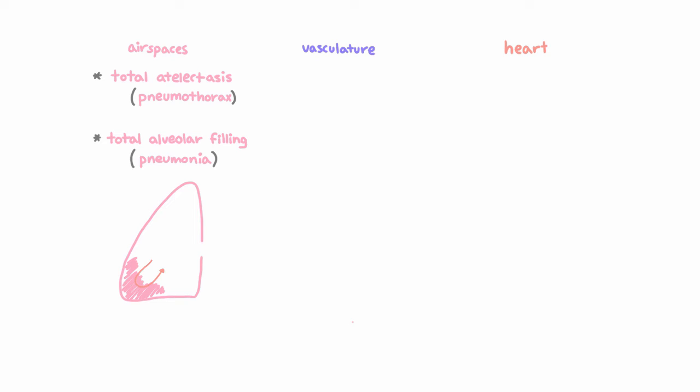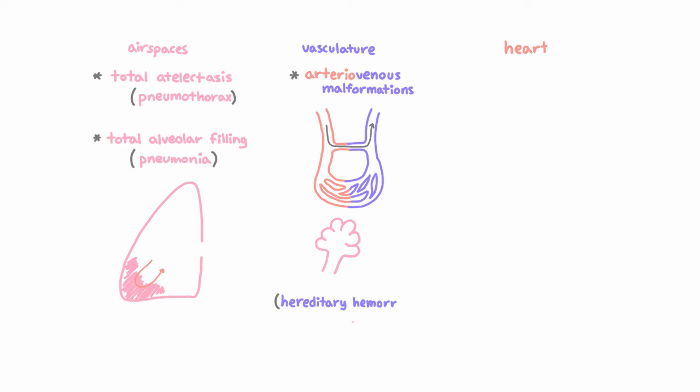Right-to-left shunt can also be increased by anatomic derangements, such as pulmonary arteriovenous malformations, in which the blood bypasses the capillaries that line the alveoli. These AV malformations can be seen in hereditary hemorrhagic telangiectasia, also known as Osler-Weber-Rendu syndrome, or the hepatopulmonary syndrome.